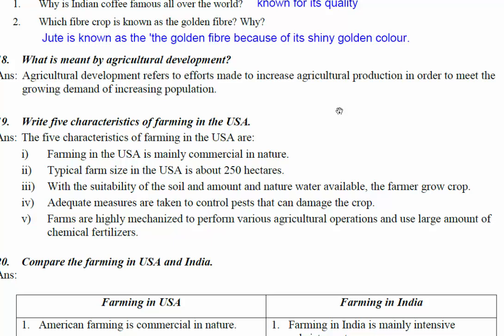Five characteristics of farming in the United States of America. First, farming in the USA is mainly commercial in nature. Second, the typical farm size in the USA is about 250 hectares — a very large size.